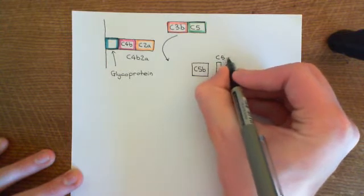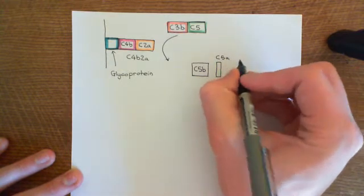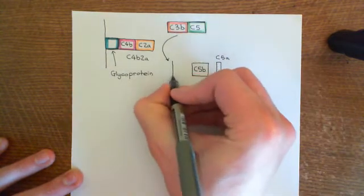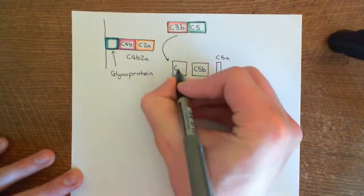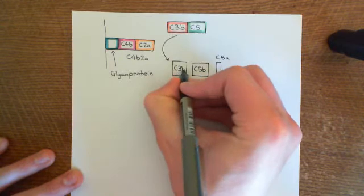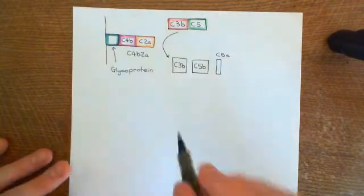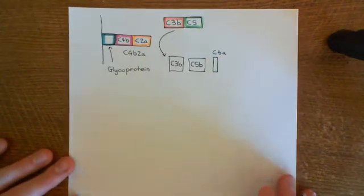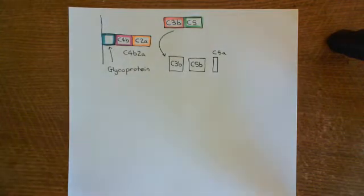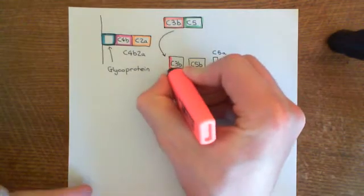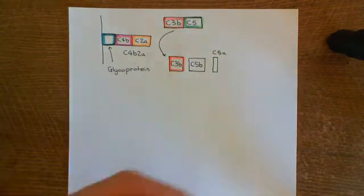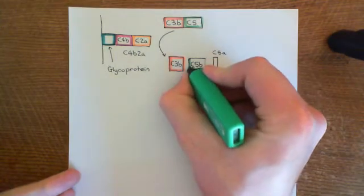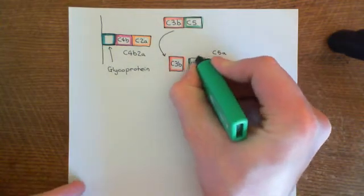Once the C4B2A complex has broken C5 down into two separate portions, the C3B will then break off — so you regenerate the C3B. This can then go off and bind to more C5, or it could bind to a glycoprotein on the surface of the microbe and opsonise it. So we've now got these two separate fragments: C5B and C5A.